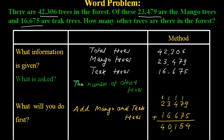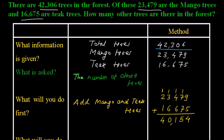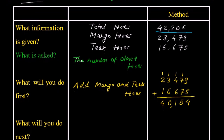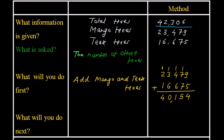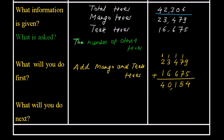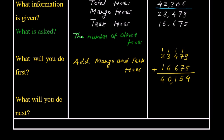Now we know that the total number of trees are 42,306. If we subtract the mango trees and teak trees from this total number of trees, we will get the final answer.